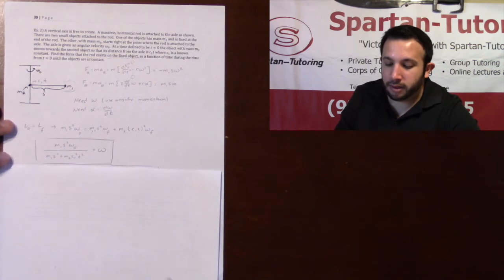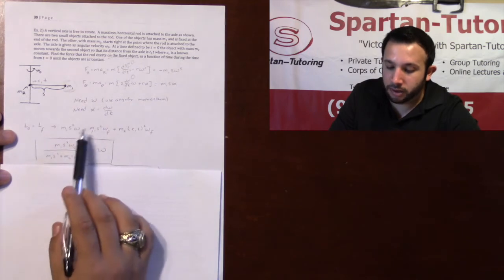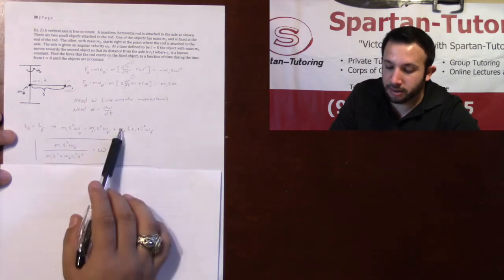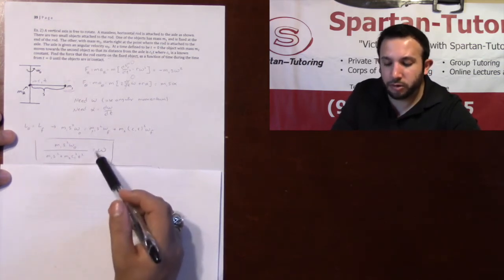And you get that omega is equal to m1s² omega naught divided by m1s² plus m2c1² t². So, that would be your omega.